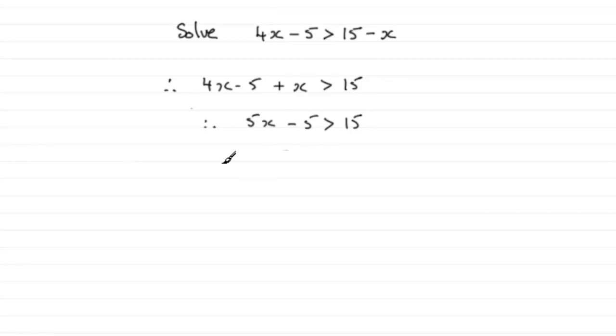Now I need to just add 5 to both sides, and we end up with 5x is greater than 15 plus the 5. In other words, 20. So we've got 5x is greater than 20.